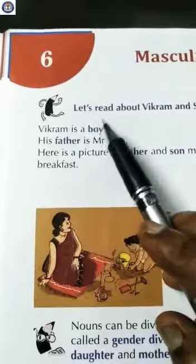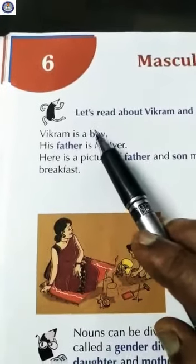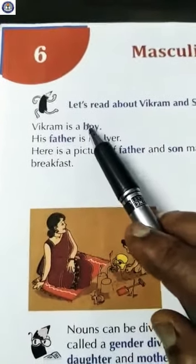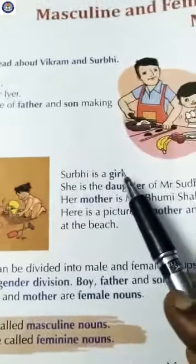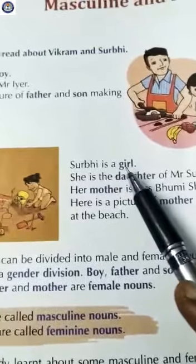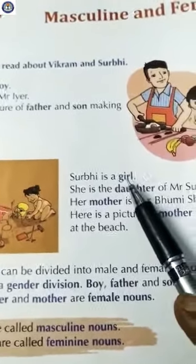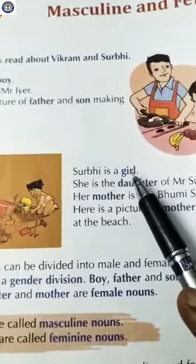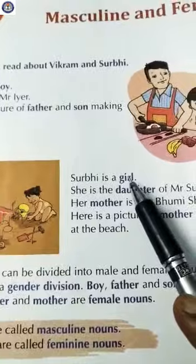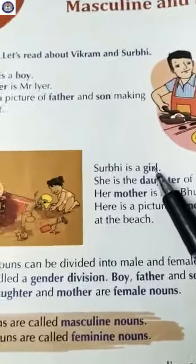A noun that describes a male is called a masculine noun, and a noun that describes a female is called a feminine noun. Clear? Male nouns are called masculine nouns and female nouns are called feminine nouns.